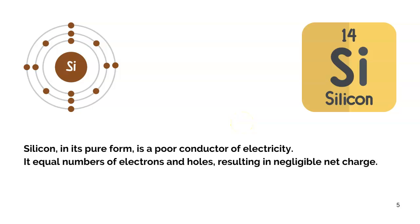Silicon in its pure form is a poor conductor of electricity, because it has an equal number of electrons and holes, resulting in negligible net charge. For any material to start conducting, it should either have an excess number of electrons or holes. But silicon in its pure form has equal numbers of holes and electrons, resulting in negligible net charge.